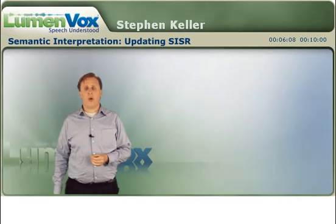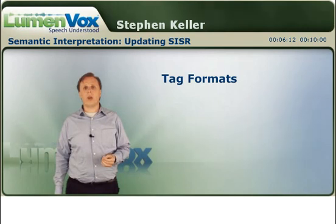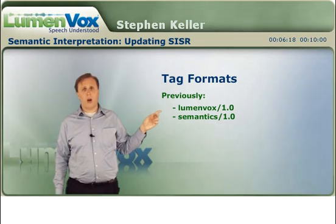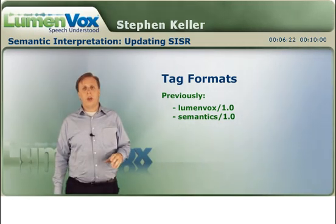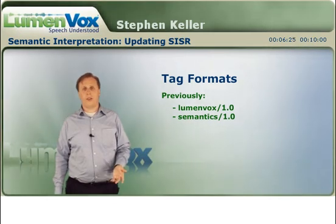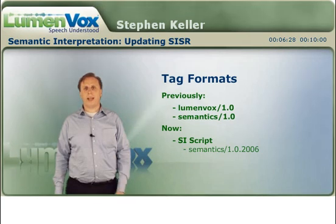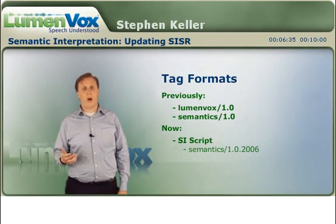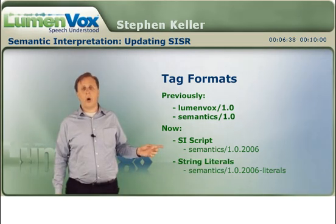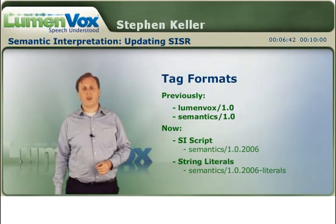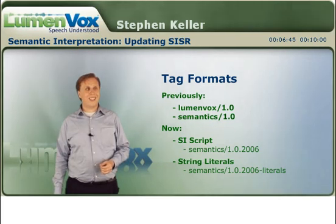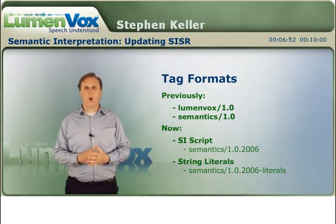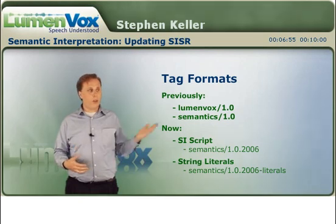Tag formats are really important. We used to support just two tag formats: lumenvox/1.0 and semantics/1.0. The current standard has two tag formats. The first is SIScript, which is semantics/1.0.2006 — that's the current SIScript tag format. We also have semantics/1.0.2006-literals, which gives you the current version of string literal tags. You can still use lumenvox or semantics/1.0 if you need backwards compatibility, but if you want to take advantage of all the new features, you'll need to use one of these two newer tag formats.